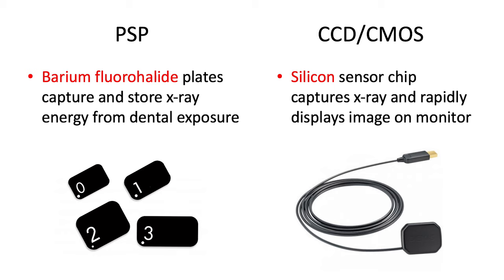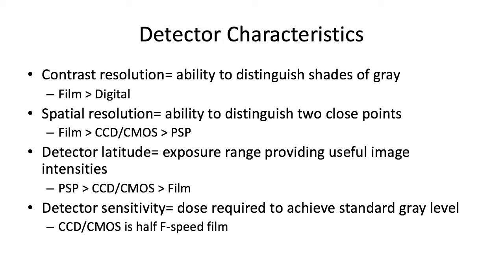CCD stands for charge-coupled device — it's a little older and bulkier. CMOS stands for complementary metal oxide semiconductor — this is the newer and sleeker model. Both are silicon sensor chips that plug directly into your computer, usually by USB, so you can capture the x-ray and it instantly displays the image on your monitor, cutting out that extra scanning step.